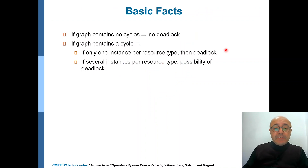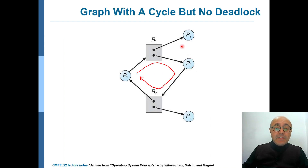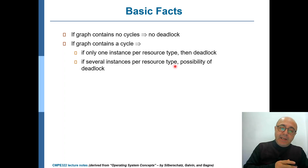The basic facts from this discussion: first, if a graph contains no cycles, there is definitely no deadlock. But if it contains a cycle, the existence of a cycle is necessary but not sufficient — you can have a cycle with no deadlock. However, if each resource type has only a single instance, then a cycle definitely means a deadlock. If there is a cycle and there are several instances per resource type, you might or might not have a deadlock — we will look at those details further.